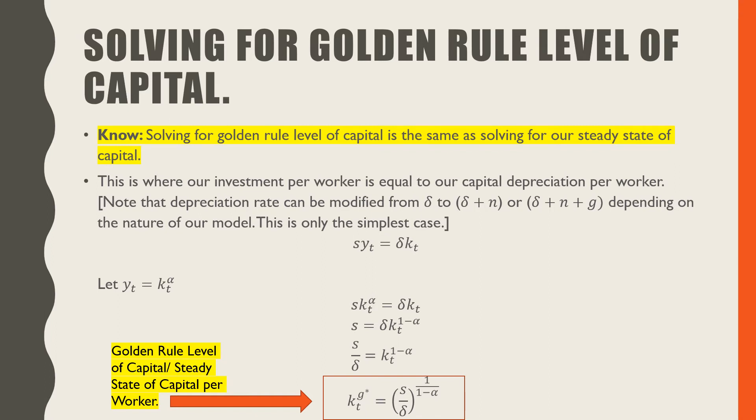Note that delta on the side of our capital depreciation rate or the amount of capital depreciated could be changed from delta to delta plus n, which is our population growth rate, or delta plus n plus g, which is g being our technological growth rate, depending on the nature of the model. What's being presented in this video is the simplest case.